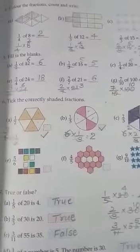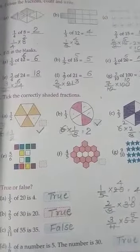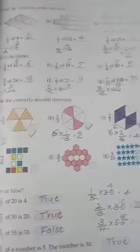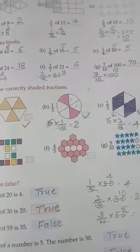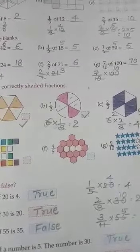And next question, fill in the blanks. 1 by 2 of 12, that is equal to 6. Already solved every question in your book.